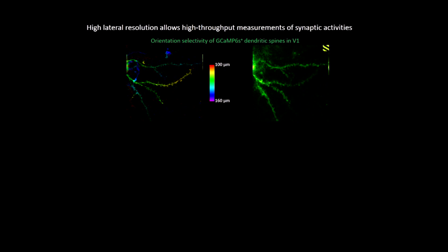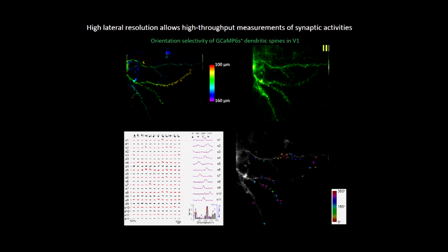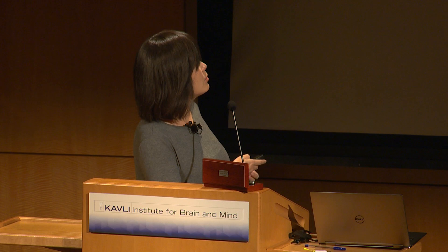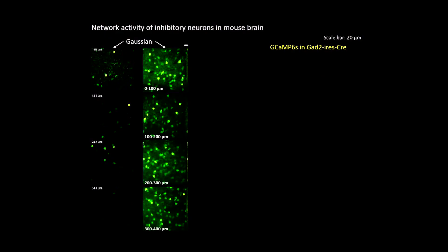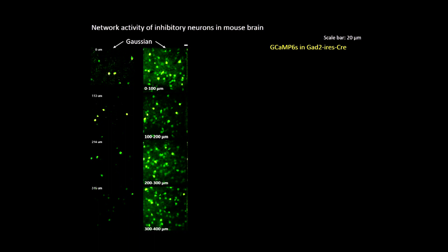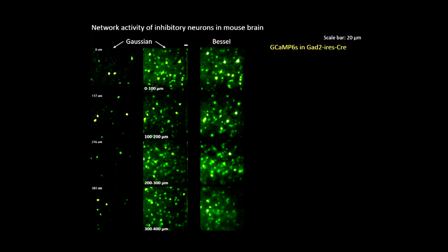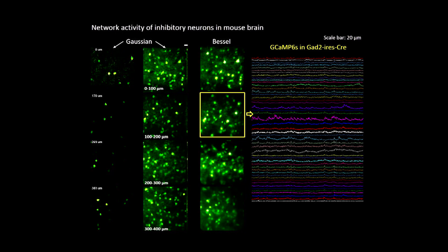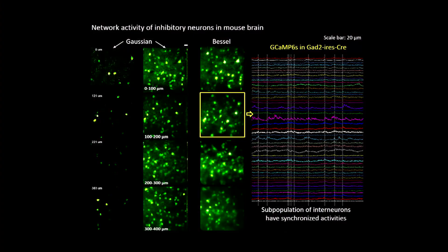Analyzing this data, we gather the tuning properties of all dendritic spines in one run, and in this case we observe some clustering of inputs of similar type. We are not limited to dendritic imaging — any sparsely labeled sample can be studied this way. Looking at inhibitory neuron populations in the mouse brain, the conventional approach requires at least 80 images to probe the first 400 microns, while the Bessel approach requires only four images. This allows us to gather many neurons per session and easily visualize that a subpopulation has highly synchronized activity.